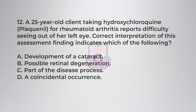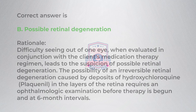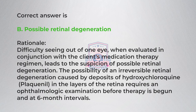Question twelve: A 25-year-old client taking hydroxychloroquine (Plaquenil) for rheumatoid arthritis reports difficulty seeing out of her left eye. Correct interpretation of this assessment finding indicates which of the following? A) Development of a cataract, B) possible retinal degeneration, C) part of the disease process, D) a coincidental occurrence. Correct answer is B: possible retinal degeneration.